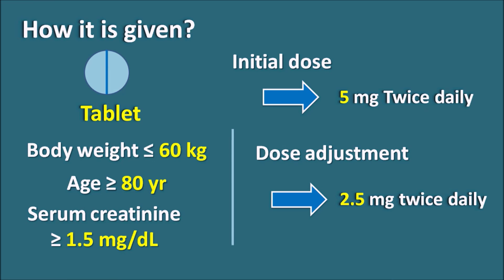Apixaban can be used for treatment and prophylaxis of deep vein thrombosis, pulmonary embolism, and stroke associated with non-valvular atrial fibrillation, as well as after post-surgical complications when there is a risk of thromboembolic formation. Being an anticoagulant, this drug should be carefully given to prevent hemorrhage and should not be suddenly stopped, as discontinuation may increase the risk of thrombosis and stroke. That's about apixaban — please subscribe to our channel, share this video, and post your comments. Thank you for watching.